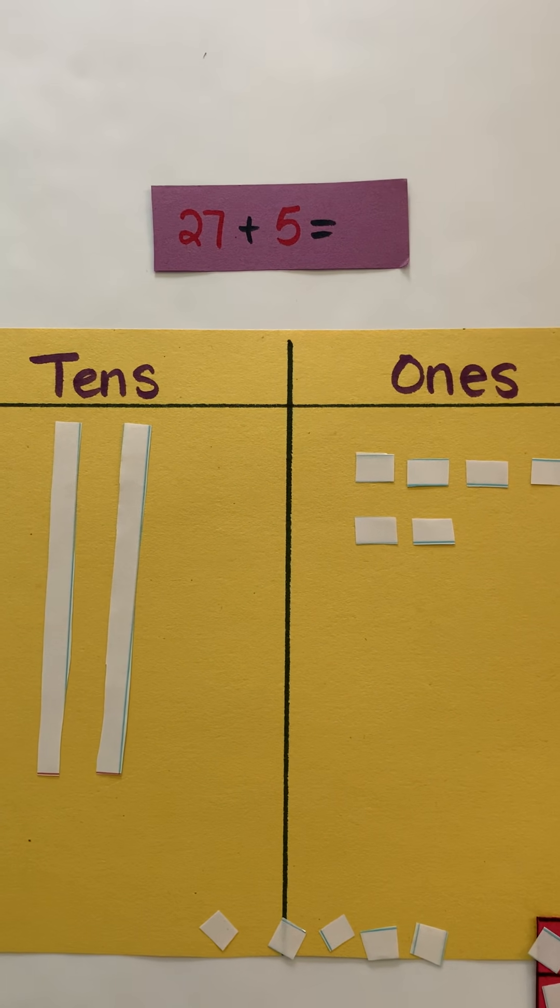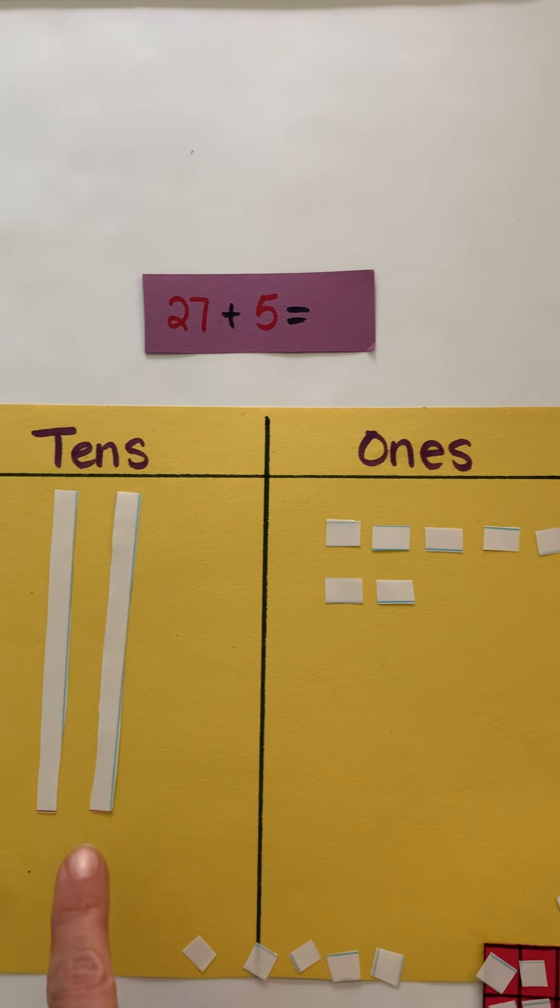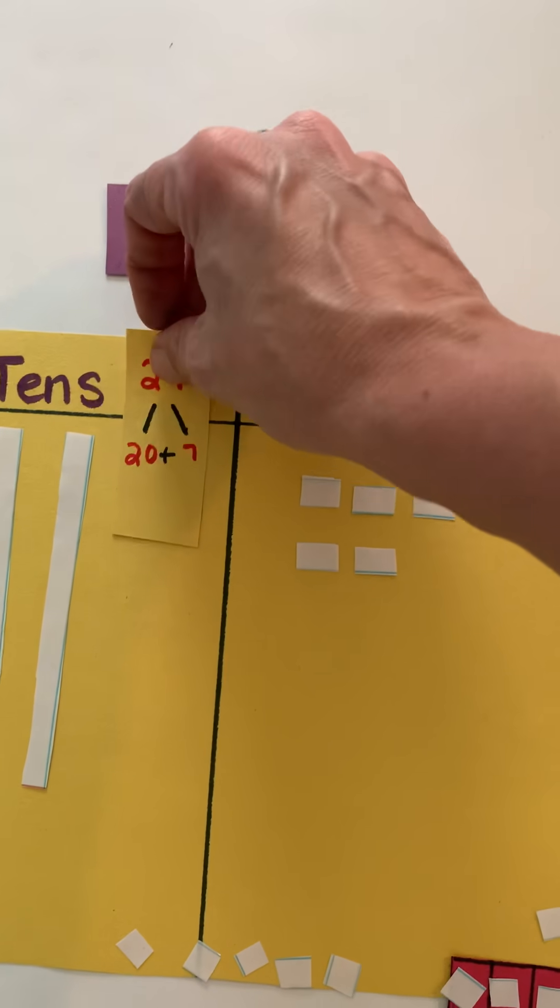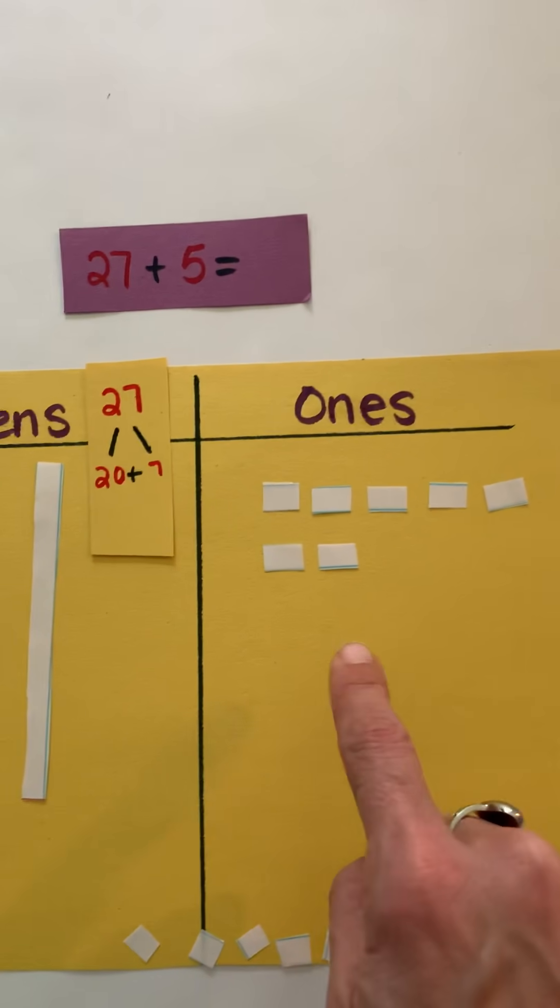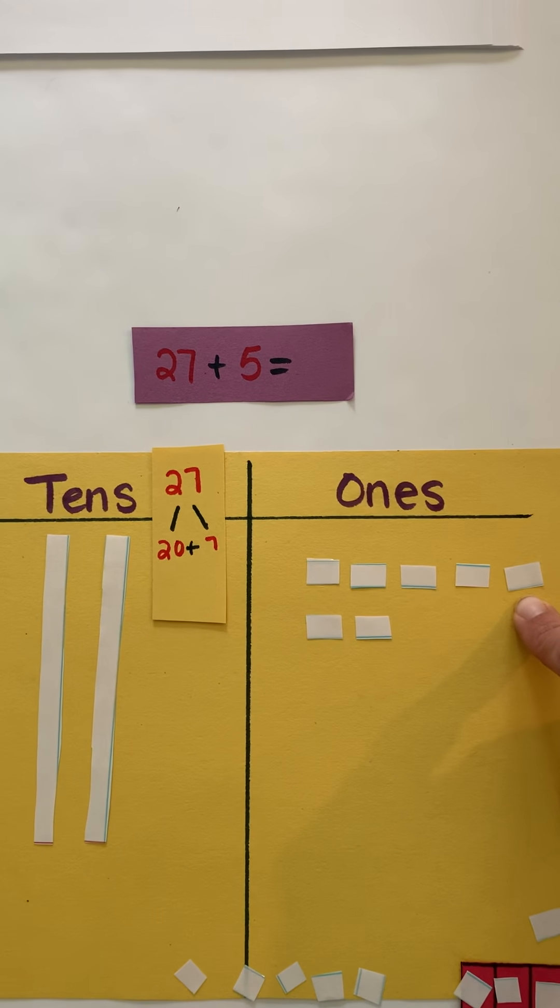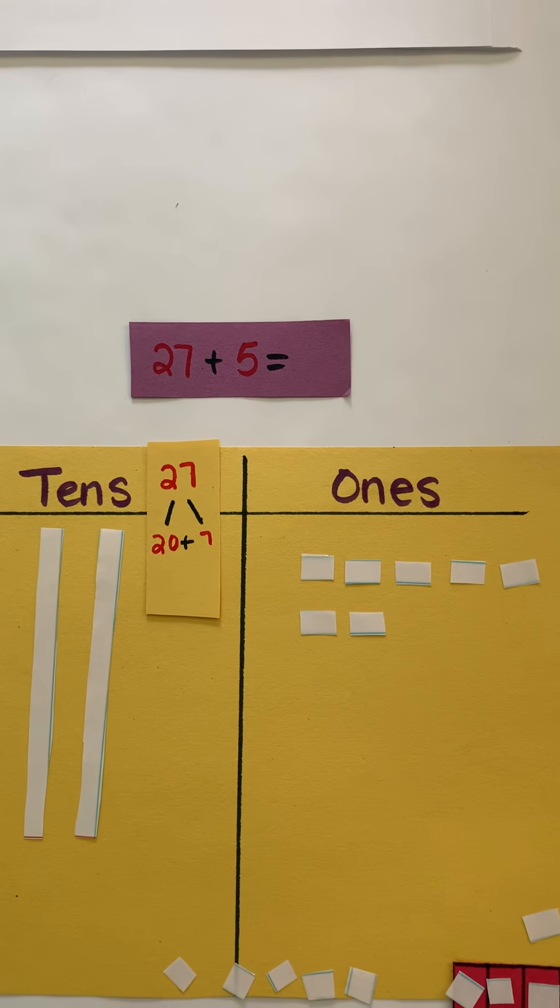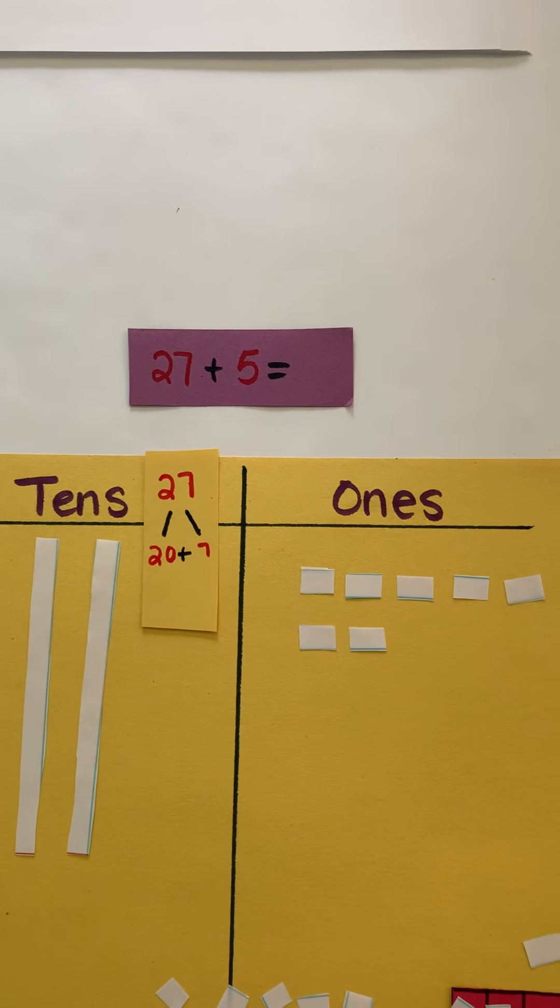I like starting off with representing the largest addend, so you can see I have two tens and seven ones. So 27 was decomposed into two tens, which is 20, and seven ones. When I'm representing my ones, I like to be able to put them in a 10 frame because students have worked with that since kindergarten, and that will help them quickly see a group of 10.